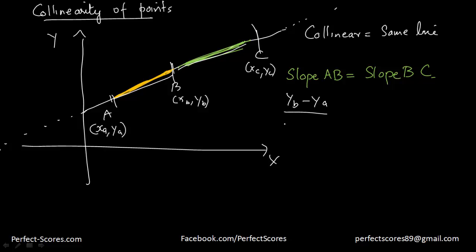That is going to be equal to the slope of BC which is (Y_C - Y_B)/(X_C - X_B), something that we have established in the previous videos about the slope of the line.